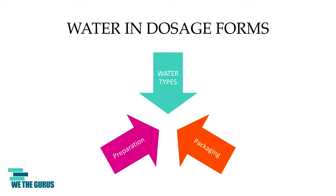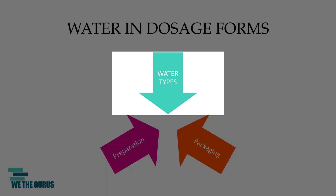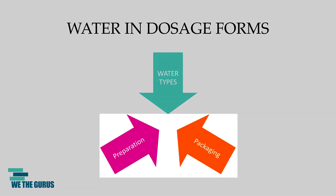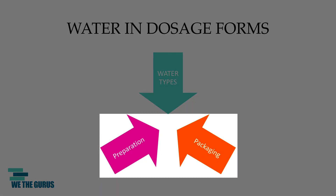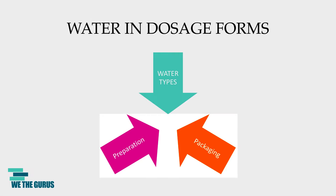In this video we will briefly review types or grades of water as defined by the United States Pharmacopoeia that are commonly used in pharmaceutical processes as well as in preparation of dosage forms. We will also compare preparation and packaging requirements for these waters. At the end of the video we will also go over a sample question to check your knowledge. So let's jump right in.